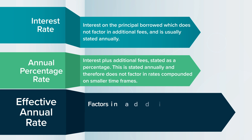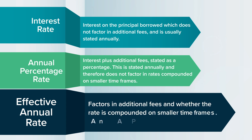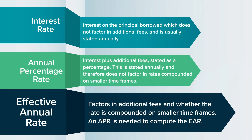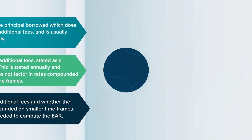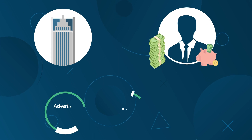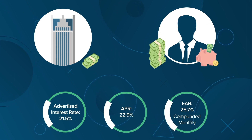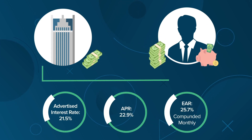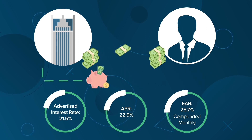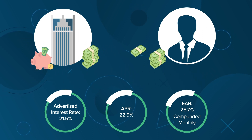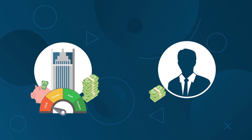Effective annual rate, or EAR, factors in additional fees and whether the rate is compounded on a smaller time frame. An APR is needed to compute the EAR. Compounding interest monthly rather than annually and other maneuvers like these to further enslave those in credit card debt is why credit card companies and other consumer lenders have a poor reputation.